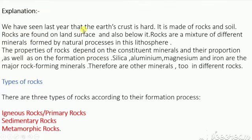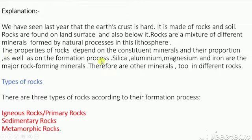We have seen that the Earth's crust is hard and is made up of rock and soil. Rocks are formed on the land surface and also below it. Rocks are a mixture of different minerals formed by natural processes in the lithosphere. The properties of rocks depend on the constituent minerals, their proportion, and the formation process. Silica, aluminium, magnesium, and iron are the major rock-forming minerals.